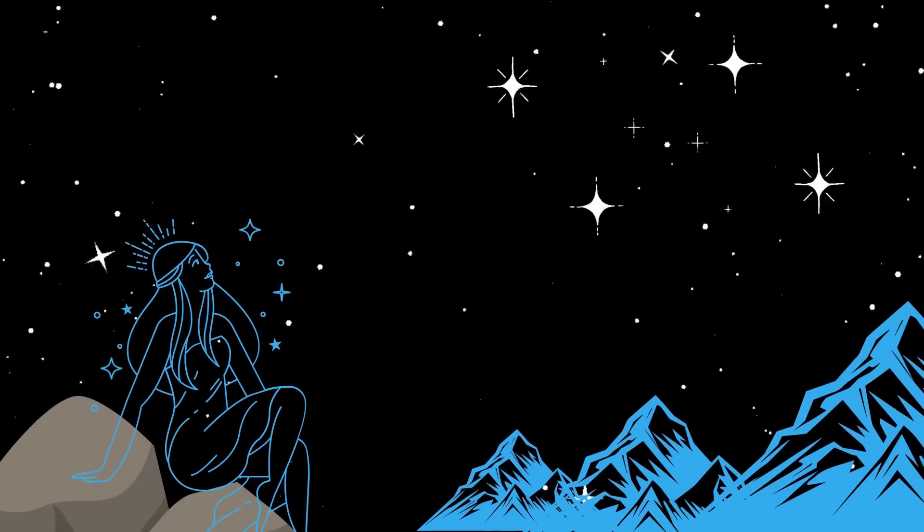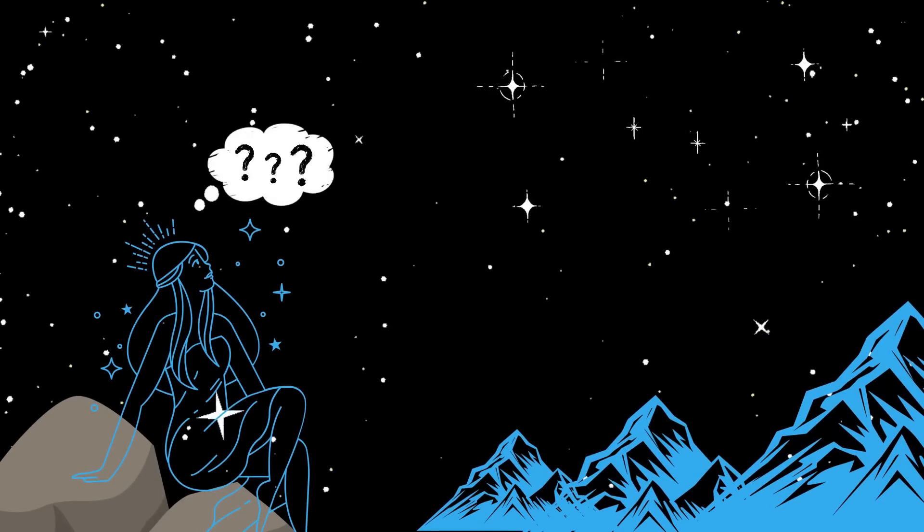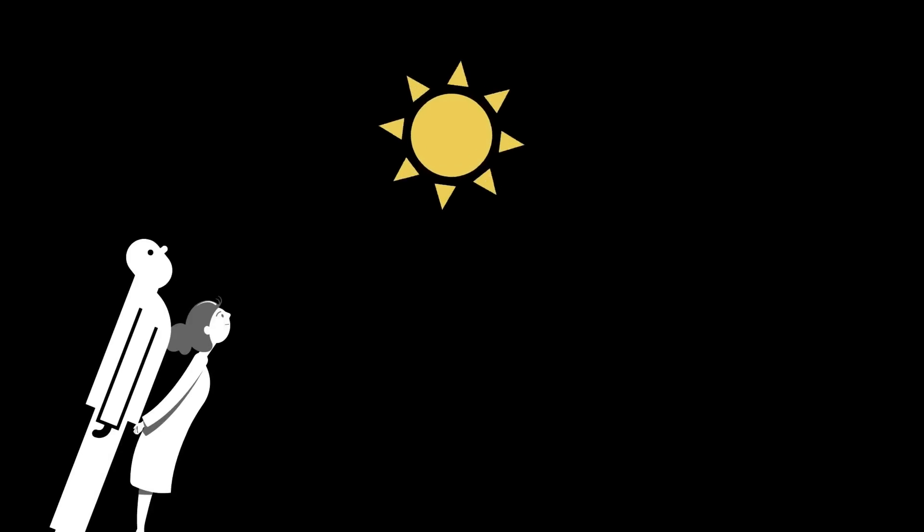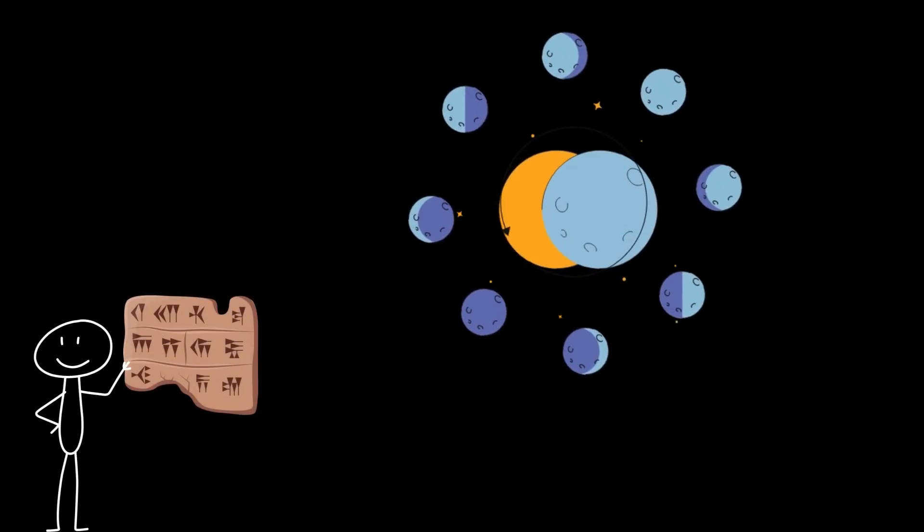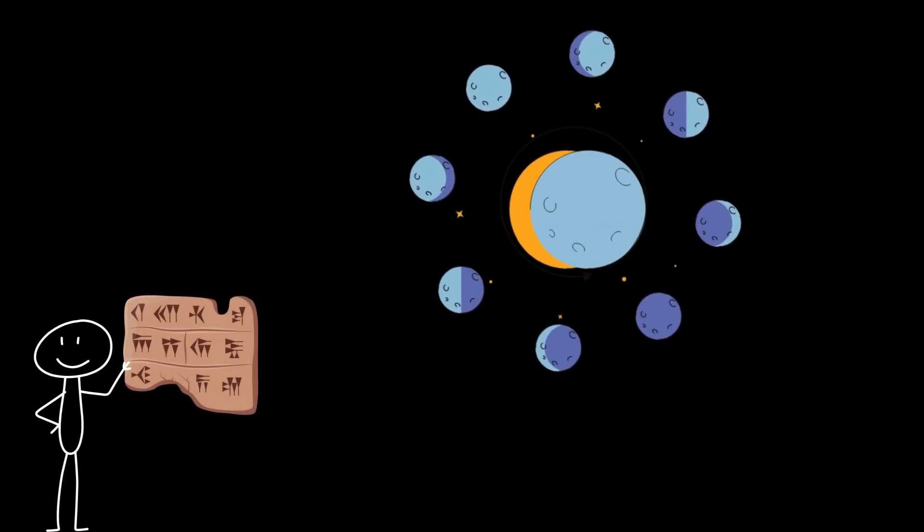It was during this time that our fascination with the stars began to turn into a study. The Babylonians recorded the movements of celestial bodies like the sun, moon, and planets and developed a calendar that could predict lunar and solar eclipses.